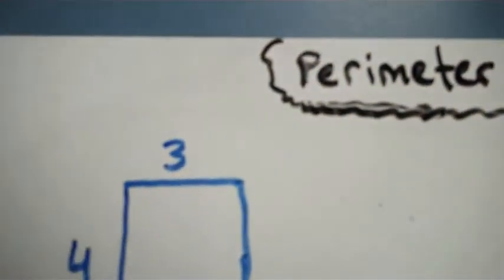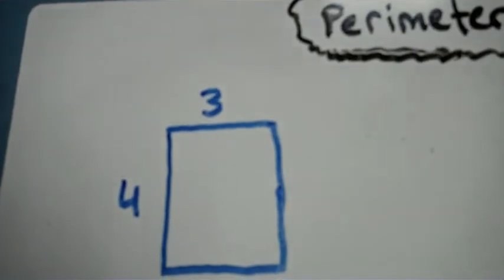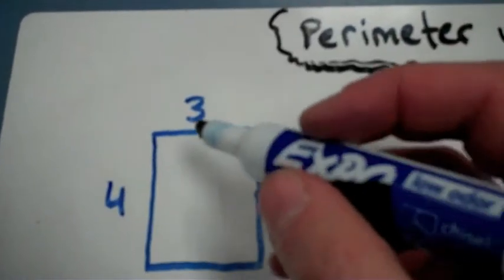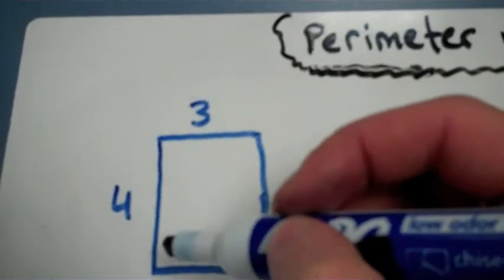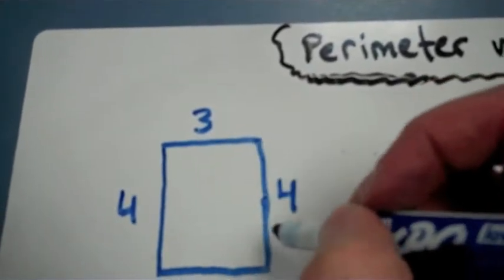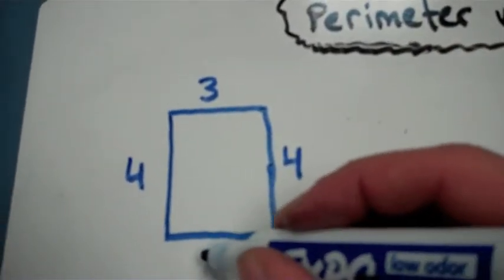First, we'll look at this rectangle here. It's a 4 by 3. Its length is 4, its width is 3. I know that the rule of a rectangle states that if one side is 4, the opposite side is 4. And I know that if this width here is 3, then its opposite width is also going to be 3.